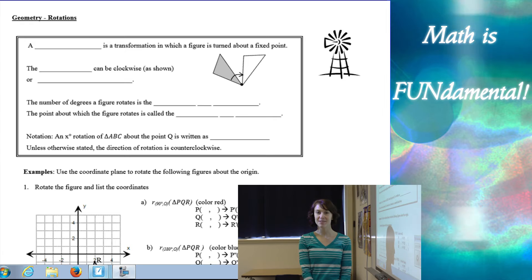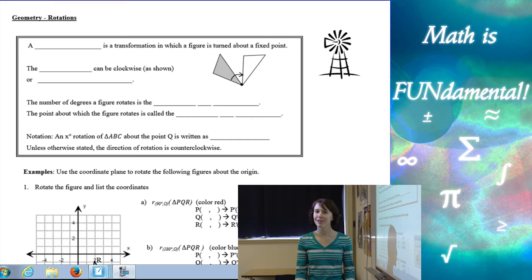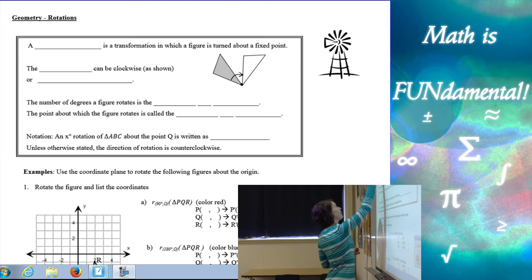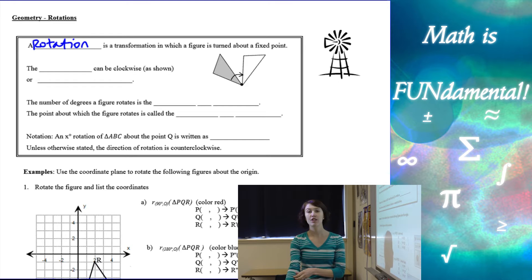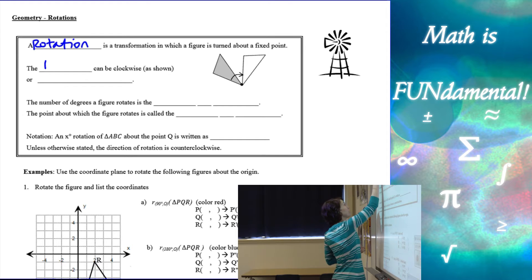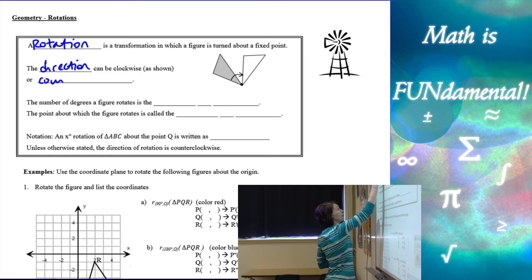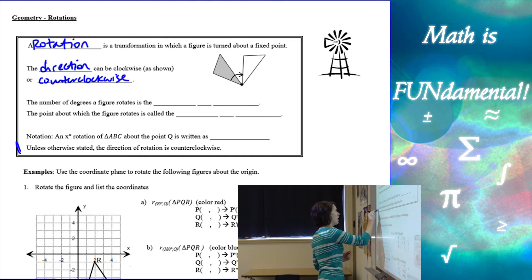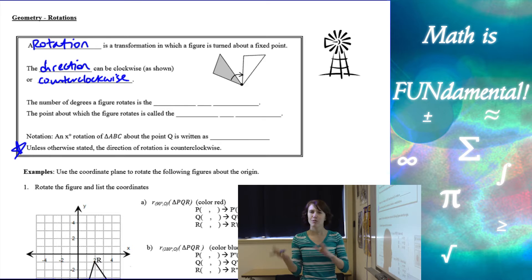Hi class, welcome to Math is Fundamental. Today we're going to be talking about rotations — this is our third lesson in our unit on transformations. A rotation is a transformation in which a figure is turned about a fixed point. The direction can be clockwise or counterclockwise. Unless otherwise stated, the direction is going to be counterclockwise, which goes with how we deal with degrees in our unit circle.